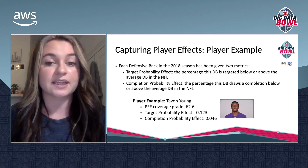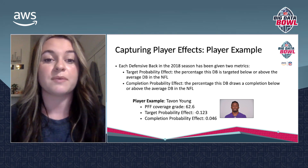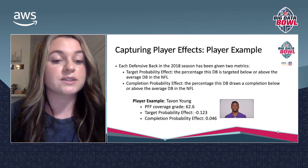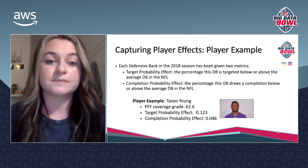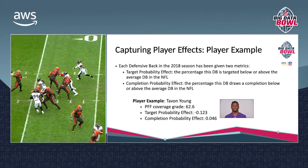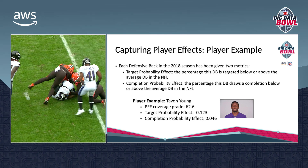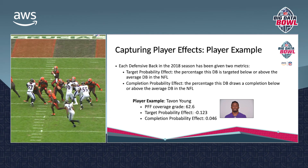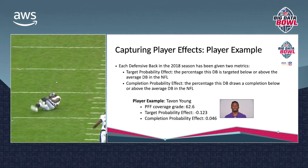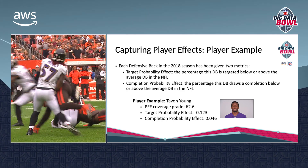One player that really stood out to me was Tayvon Young. His PFF coverage grade was 62.6, so it wasn't anything blaringly great. However, his target probability effect was negative 0.2, which means that he is targeted 12% less than the average defensive back. Because of this, it might be possible that he's actually undervalued.